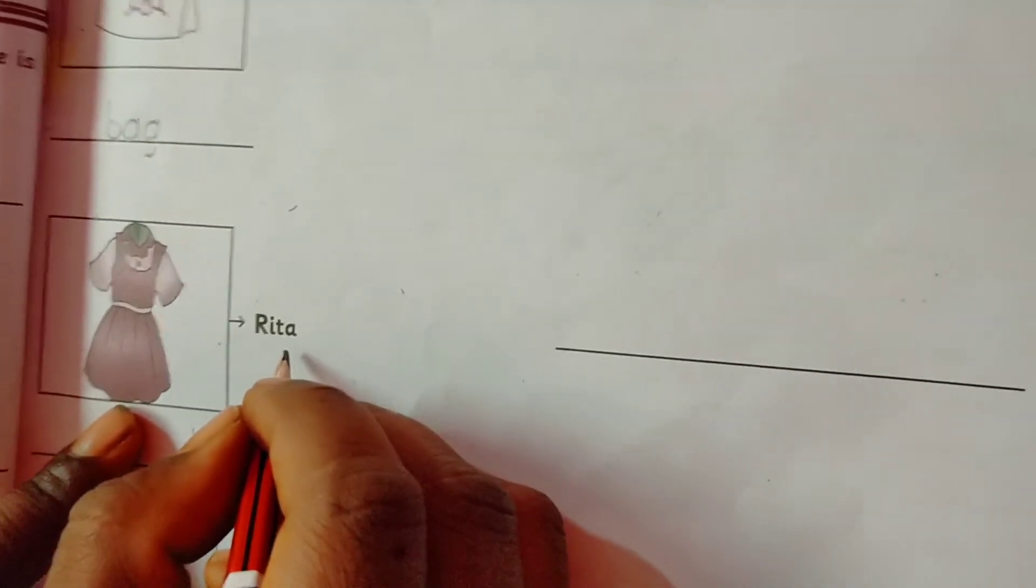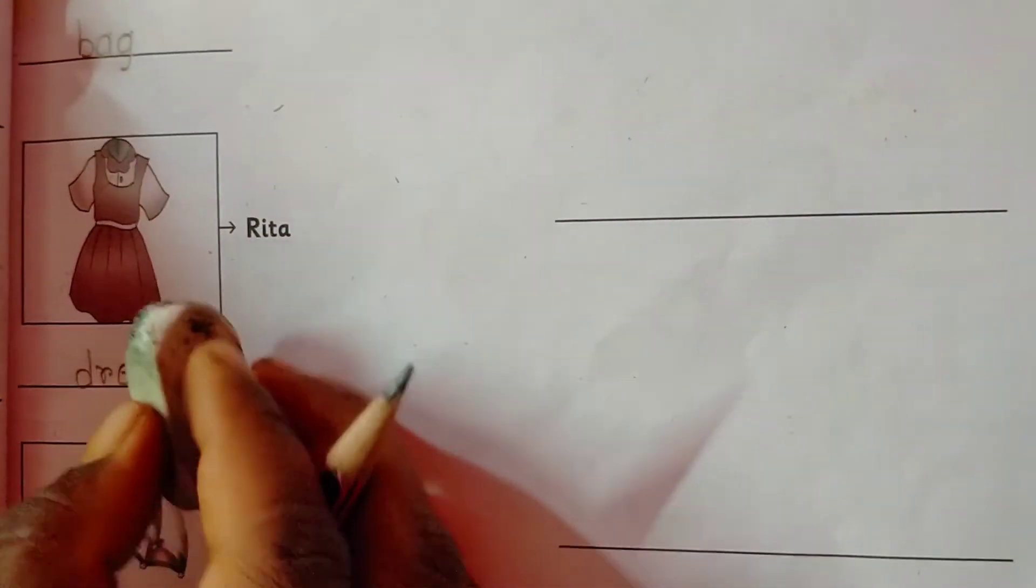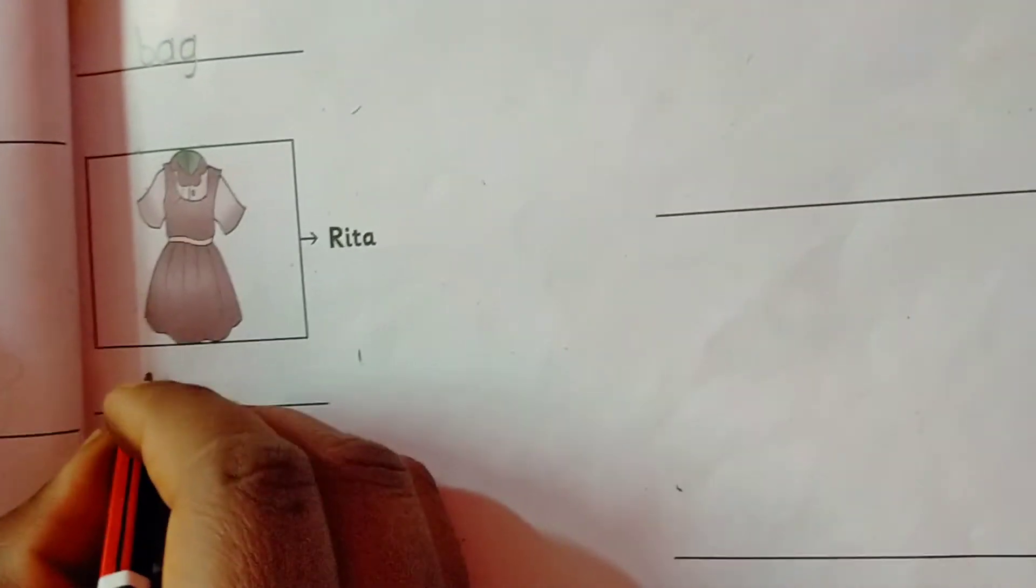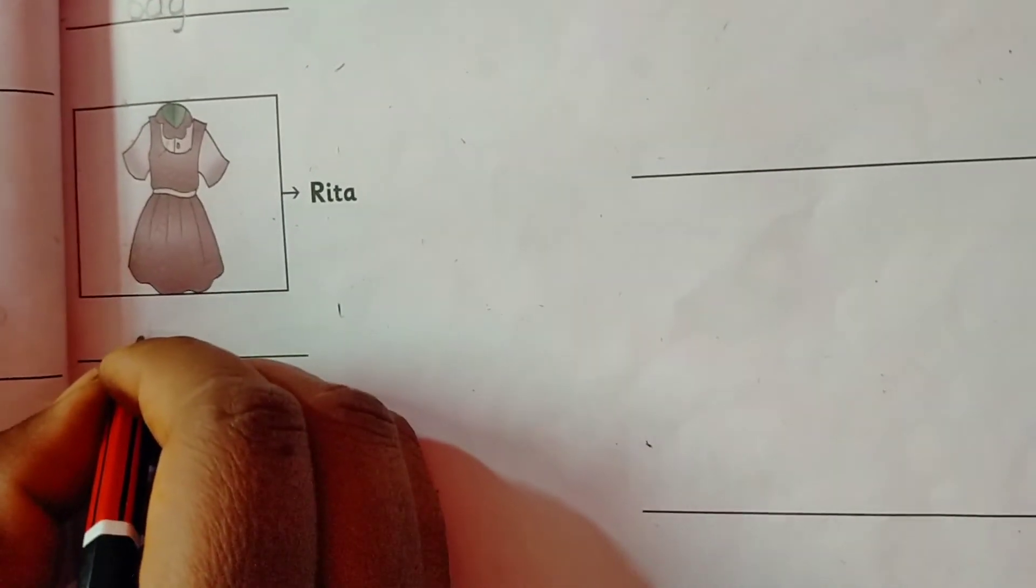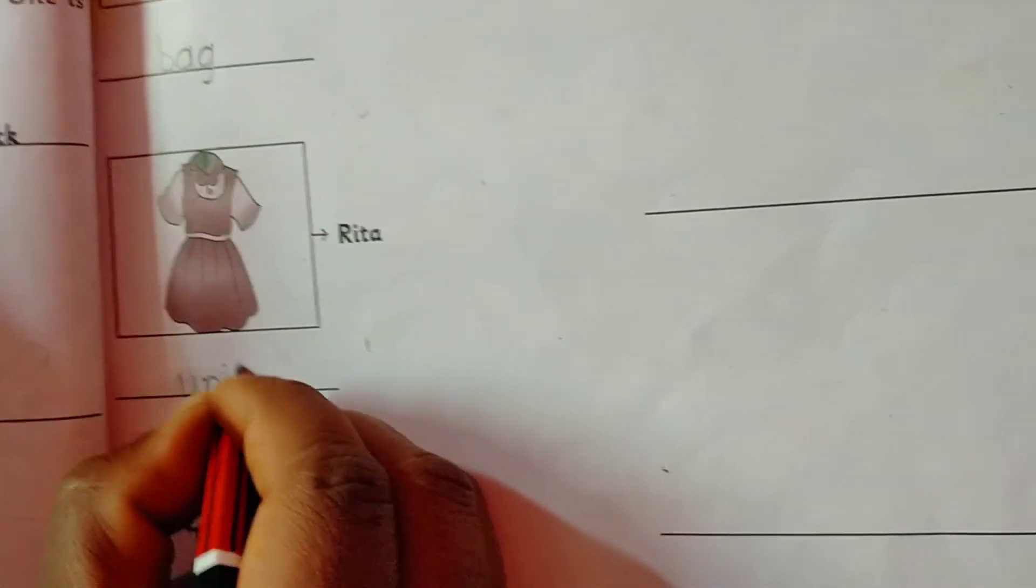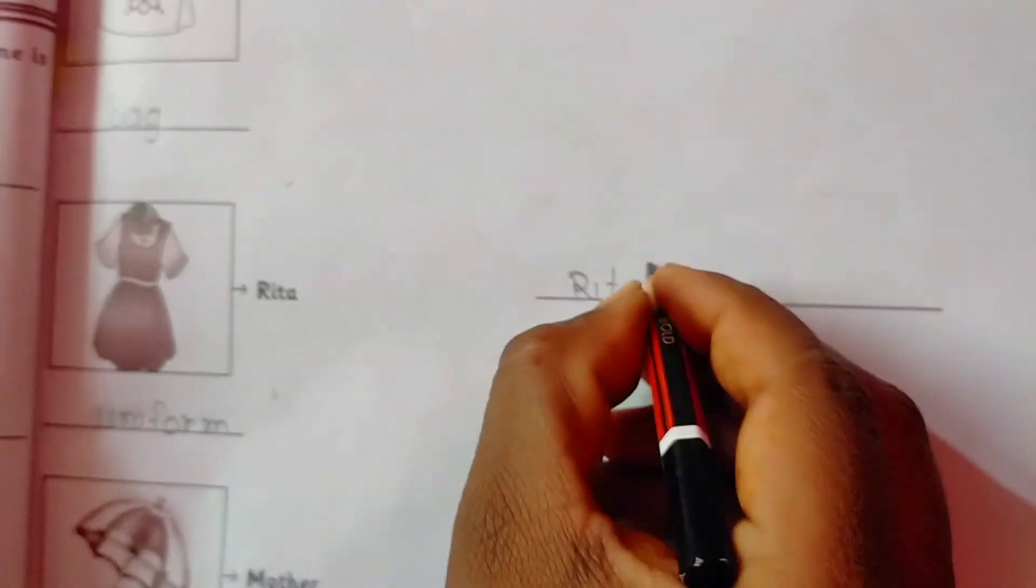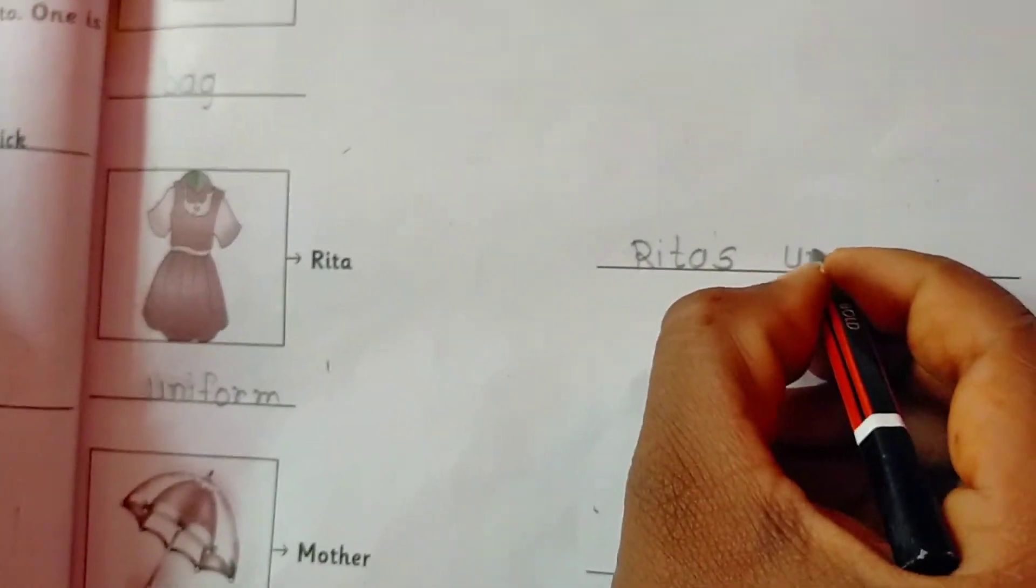Rita. Rita's dress, uniform, or dress, or frock. How can we write it? Uniform. Uniform. Rita's uniform. Rita's uniform.